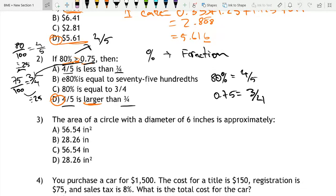Okay, so now I'm going to assume that you've paused the video and let's go over it. So the area of a circle with a diameter of six inches is approximately. So the area of a circle, let's first go over this. The area of a circle is pi times the radius squared.